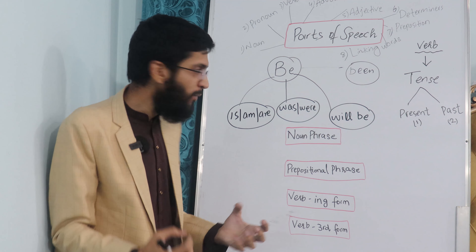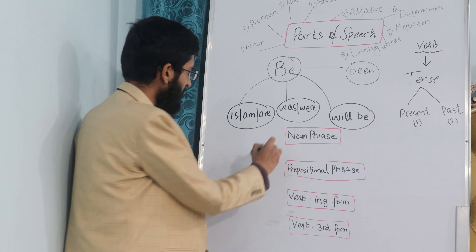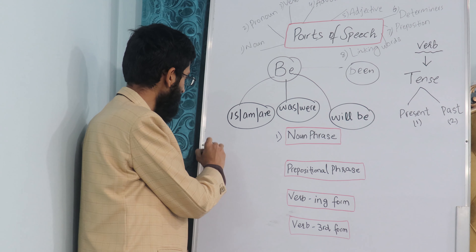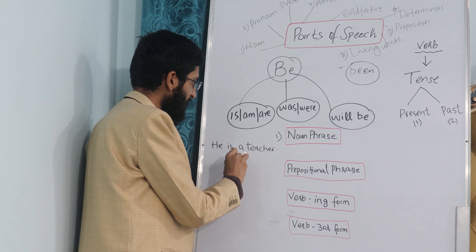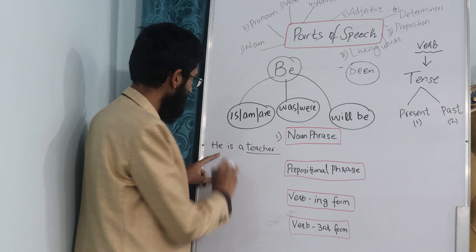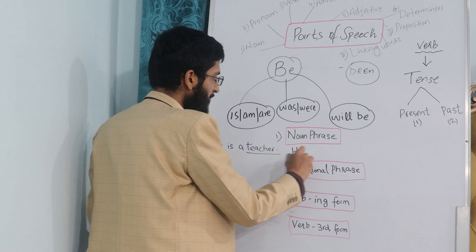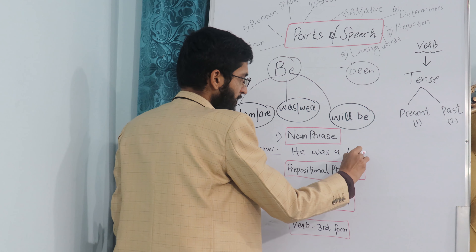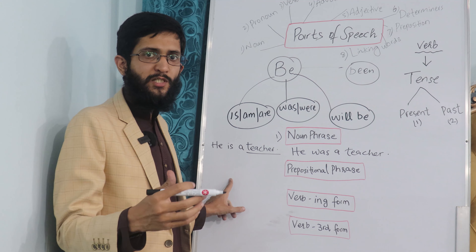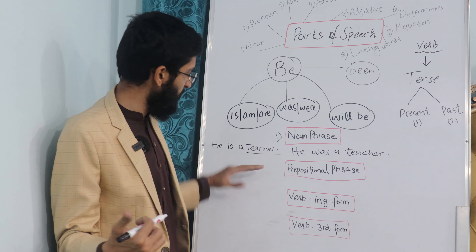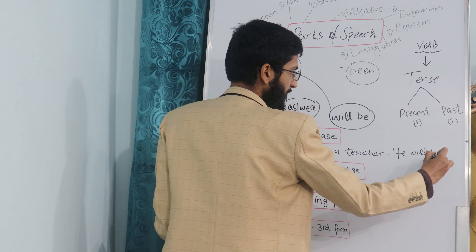What structures can we make with these three tenses? We are discussing the 'be' family of verbs. The first structure is to use it with a noun phrase. For example: 'He is a teacher' — 'a teacher' is a noun phrase. For past: 'He was a teacher' — meaning he is not a teacher at the moment; he was a teacher ten years ago or when I was studying.